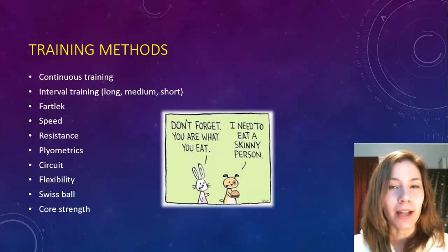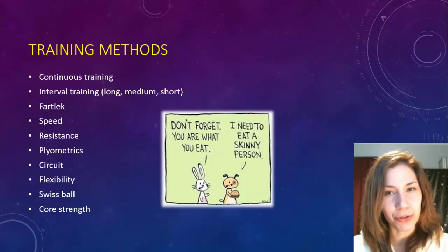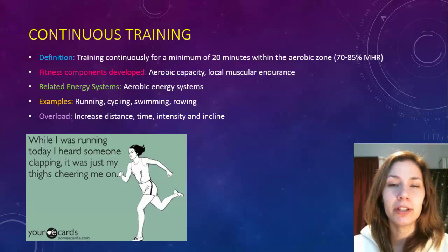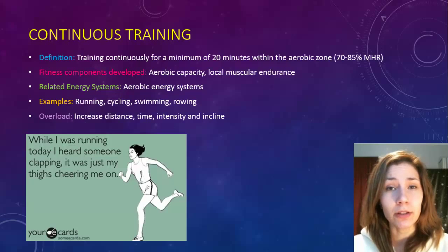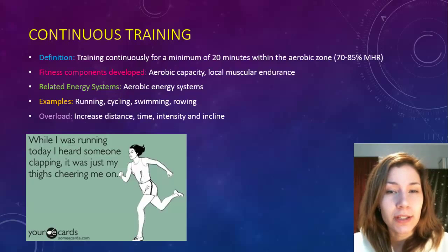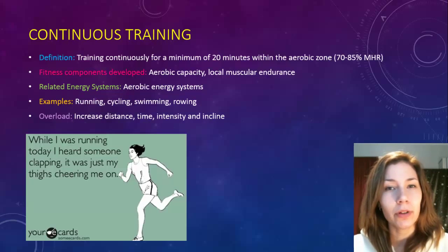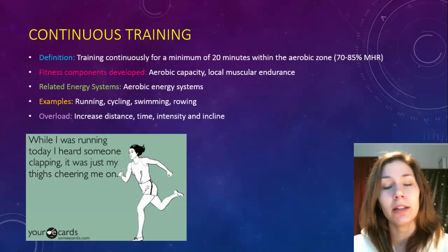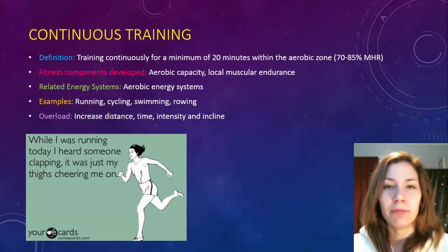Starting off with continuous training — basically it means you're going to continuously train for 20 minutes or longer, working within your aerobic zone at 70 to 85 percent max heart rate. You'll be working your aerobic energy system and also local muscular endurance at the same time. Some examples you could use are running, cycling, swimming, and rowing — basically anything that's a continuous movement for 20 minutes.